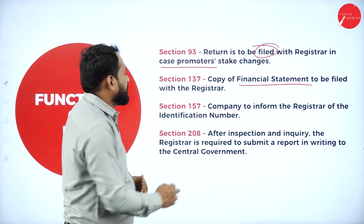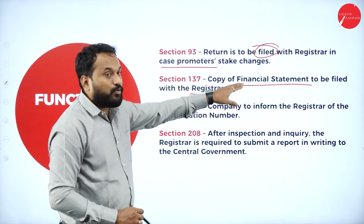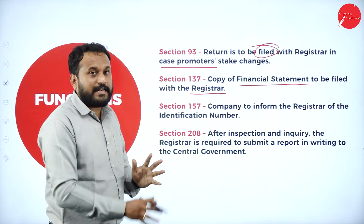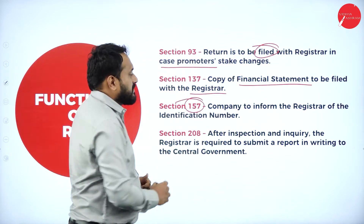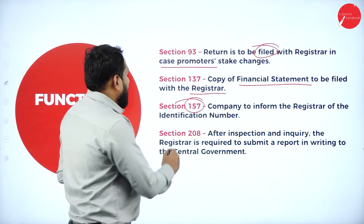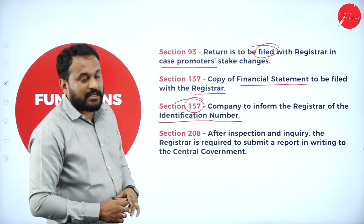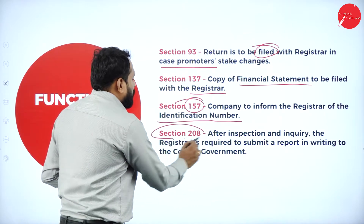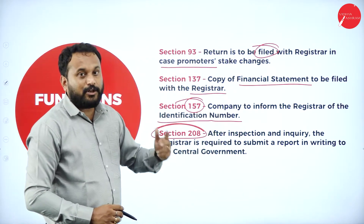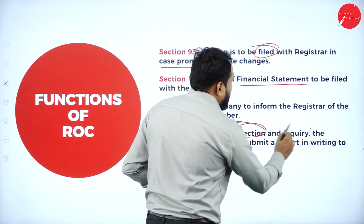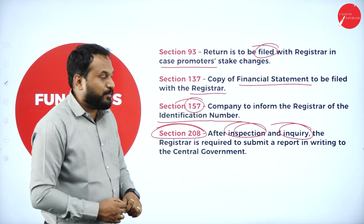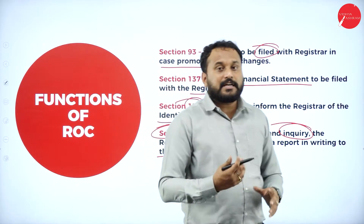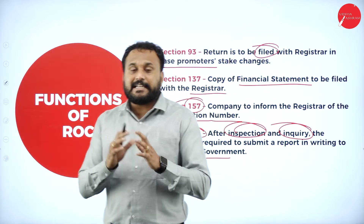Section 137 states that a copy of the financial statement must be filed with the Registrar. Whatever financial statement the company prepares, one copy must be prepared specifically for the Registrar of Companies, and it must be filed properly and accurately. Section 157 states that the company must inform the Registrar of its unique identification number — that is also a key function of the ROC. Section 208 states that after inspection and inquiry, the Registrar is required to submit a report in writing to the central government.